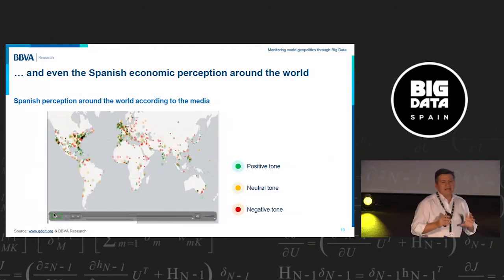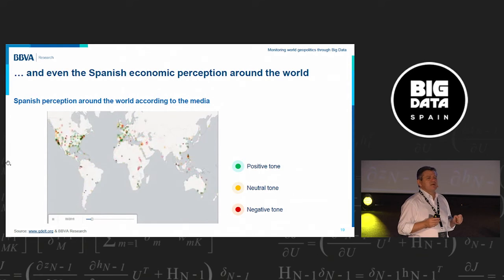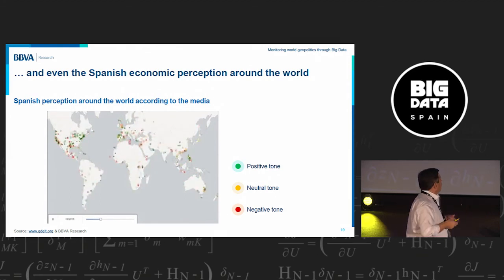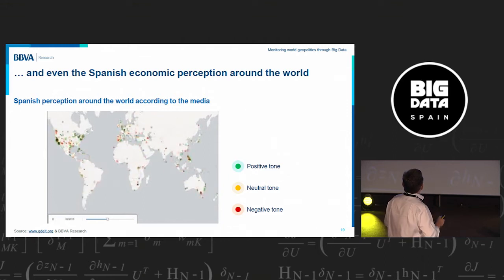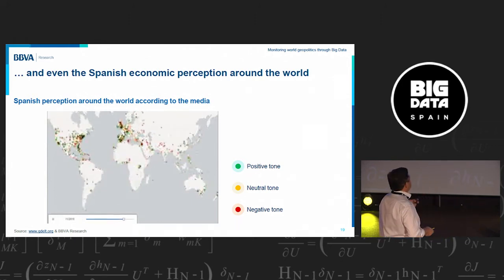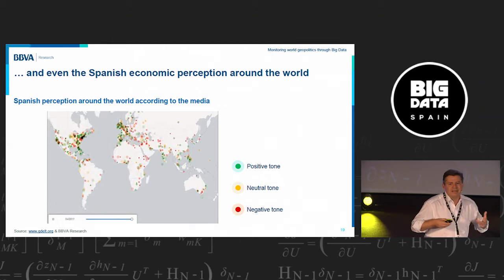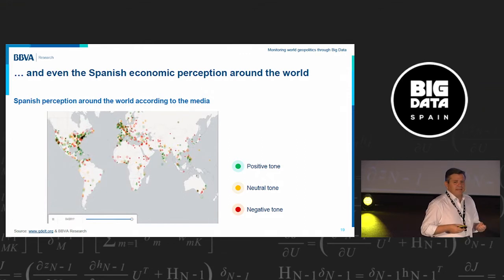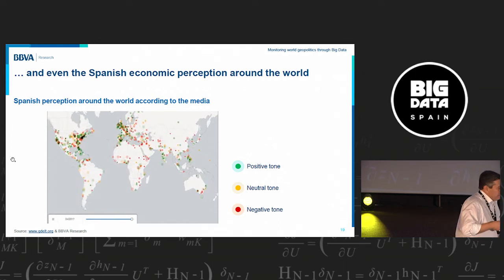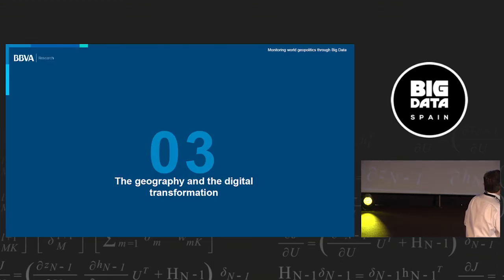Finally, we can understand how the world feels towards anything. For example, this shows how Spain is perceived around the world — what the rest of the world thinks about Spaniards — in positive tones in green, neutral, or negative, and how this is evolving over time. In general terms, people really like Spaniards because green colors predominate, and we hope this continues. I'll now hand back to Tomasa to explain some other interesting trends.